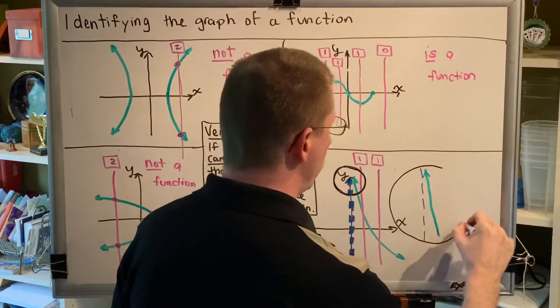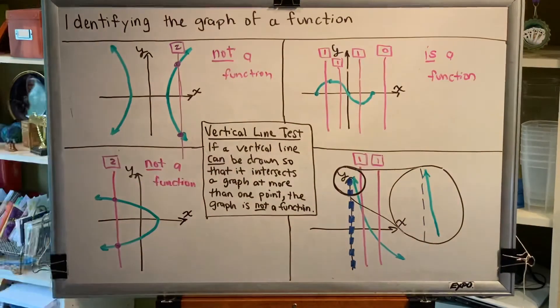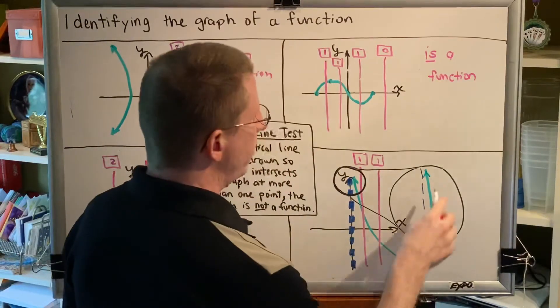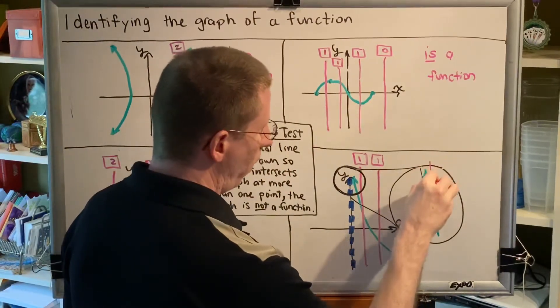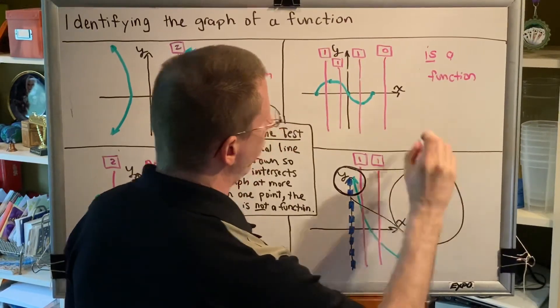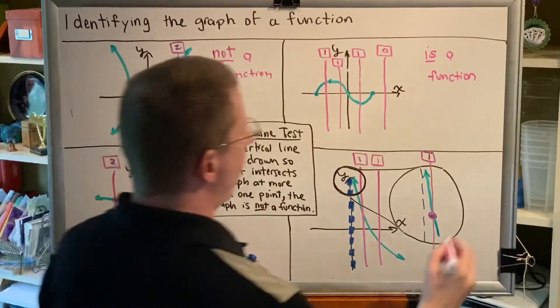This is my zoomed in, magnified look at this particular part of the graph. And if you try to intersect this with a vertical line, you're going to see that it does so at exactly one location. So the conclusion is this is a function.